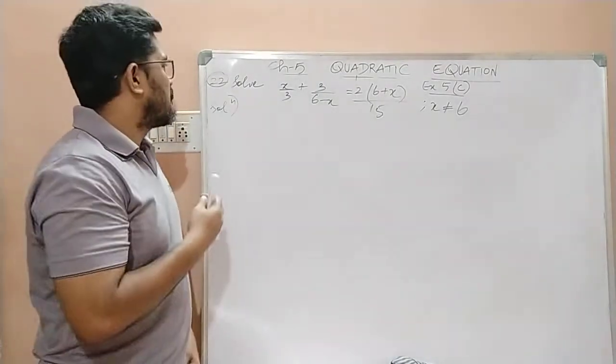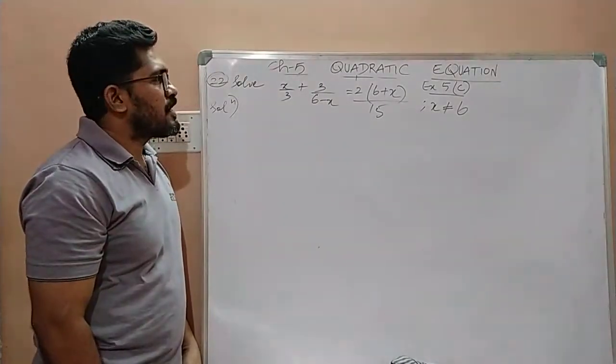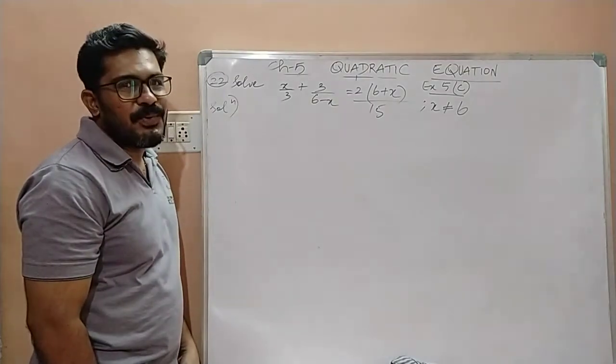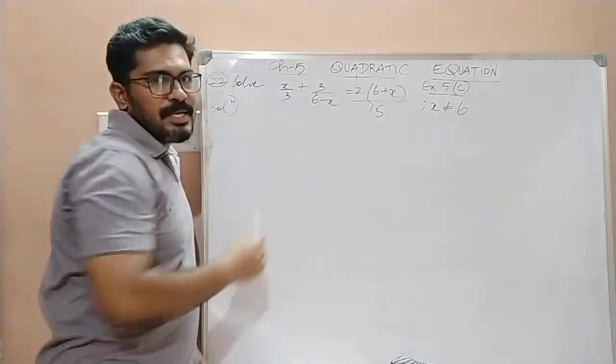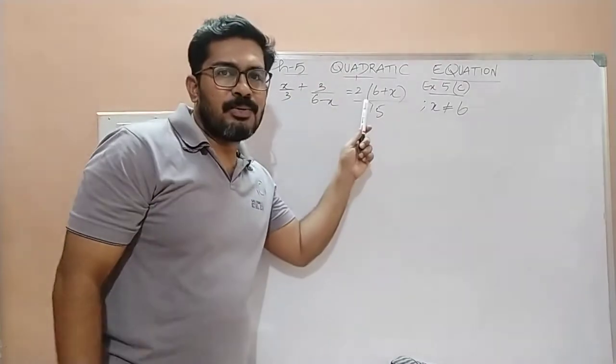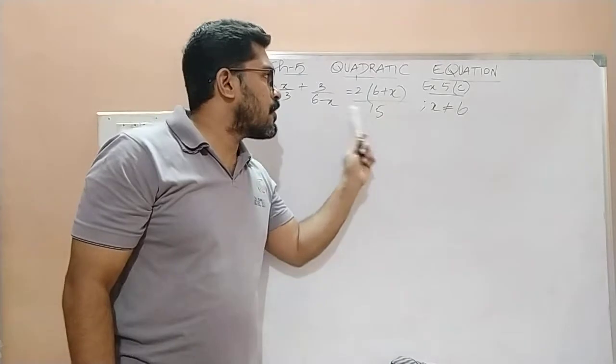Hello friends. So we are ready with the next question. Question number 22. We have to solve x by 3 plus 3 by 6 minus x is equal to 2 into 6 plus x upon 15.